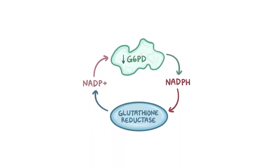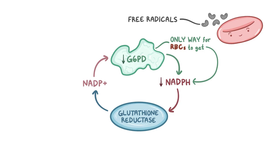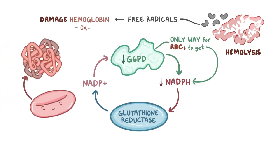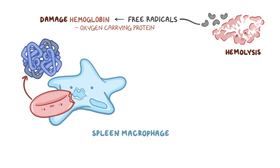Low levels of G6PD cause low levels of NADPH, leaving low levels of reduced glutathione. G6PD is the only way for red blood cells to get NADPH, so they are especially susceptible to damage caused by free radicals. When these build up, it causes the cell membrane to become unstable, causing their lysis or hemolysis. Free radicals can also directly damage hemoglobin molecules, which are the oxygen-carrying proteins in red blood cells. These damaged proteins precipitate inside the cell and are called Heinz bodies. The spleen macrophages, responsible for eating up old or abnormal red blood cells, notice these Heinz bodies and try to remove them by taking a bite out of the cell, leaving these red blood cells partially devoured — so we call them bite cells.